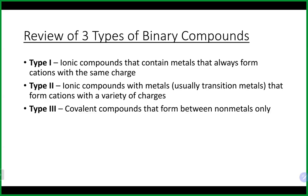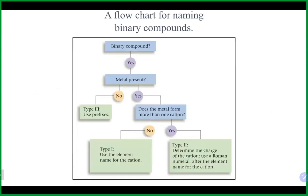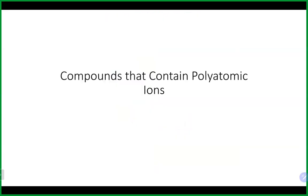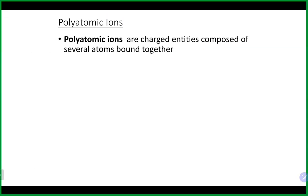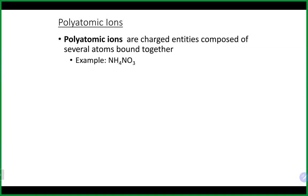There is a very rare case where a prefix and Roman numeral could appear together, only because the polyatomic ion's own name contains a prefix. Other than that, they should never cross over. If a metal is present it's Type 1 or Type 2; if no metal, it's Type 3. Now let's talk about polyatomic ions to finish our naming discussion.